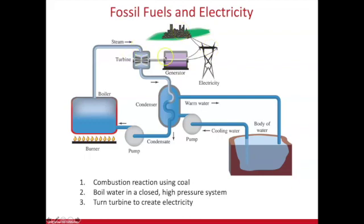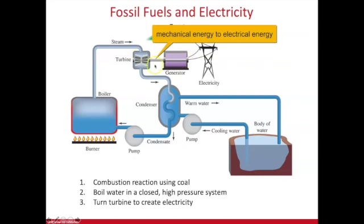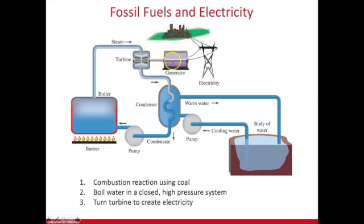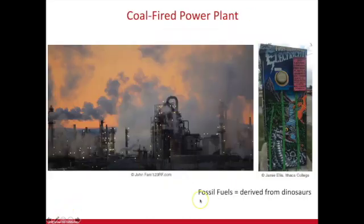The generator only generates electricity if it's moving, and it's moving because of the turbine. This is a conversion of mechanical energy — from the steam moving the turbine blades — into electrical energy that's generated for the grid.